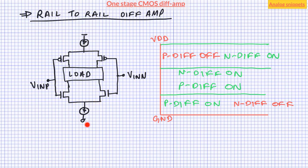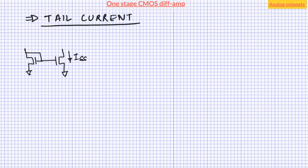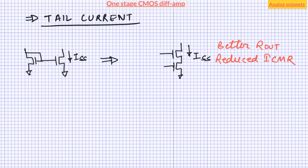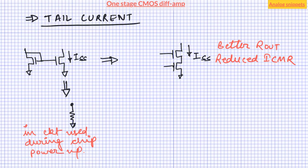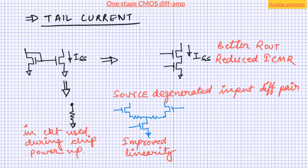We will now discuss a few options to implement the tail current. For most diffamp circuits, a simple current mirror serves the purpose. To improve performance, we can replace it with a cascode current mirror, at the cost of slightly reduced ICMR. On the other extreme, the tail current is replaced by a simple passive resistor, regularly done for amplifiers and comparators used during chip startup when reliable current biases may not be available. In certain applications, the input diff pair is source-degenerated to improve linearity, though the voltage drop across the resistor reduces ICMR. An alternate implementation splits the tail current source into two.